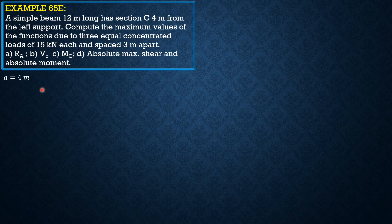In this case, A is the distance of point C from the left support. H is 3 meters — the distance between the three equal loads. P is 15 kilonewtons, and L is 12 meters.